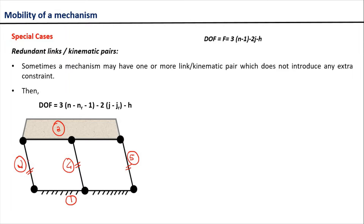For example, let's consider link 2 as an input link and link 5 as an output link. Now if you remove link 4, the relative motion between this input and output link is not going to change. Similarly, if we remove link 2 and consider link 4 as input link and link 5 as output link, even if we remove link 2 the relative motion between input link 4 and output link 5 is not going to change. The same can be applied when ignoring link 5.